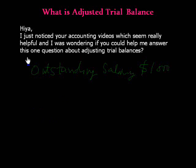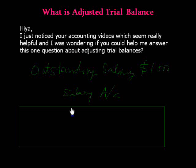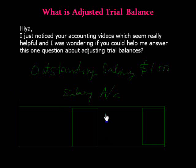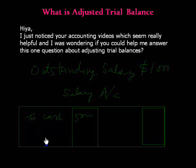Just open the salary account. Here we write the same expenses. This is an outstanding expense. To cash: five thousand, and to outstanding salary: one thousand. The total is six thousand. And this appears in the trial balance — the adjusted trial balance.